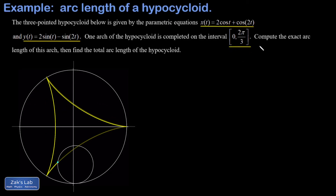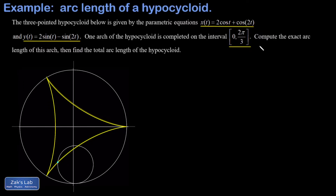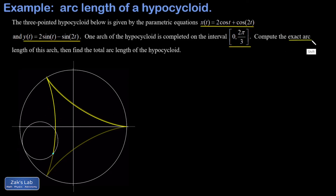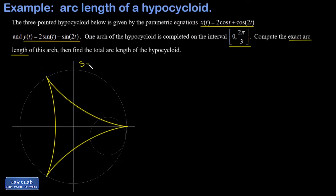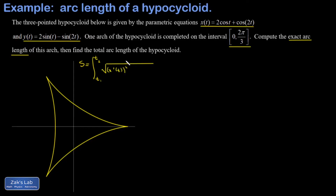The strategy is to compute the arc length of one arch and then multiply by 3 to get the total arc length. We're asked to do this in exact form, even though the integral will be very ugly. As a quick reminder, arc length in parametric form is given by the integral from the starting value to the finishing value of √(x′(t)² + y′(t)²) dt. I'll post a link to the video where that was first derived.